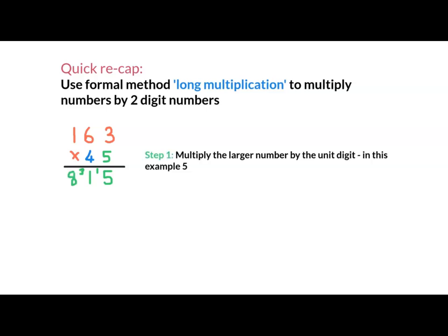We can see that 163 multiply by 5 gives us an answer of 815. So step 1, multiply the larger number by the unit's digit. In this example, 5. 45: 4 is the 10's digit, 5 is the unit's digit.